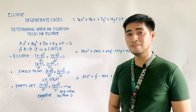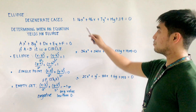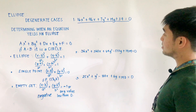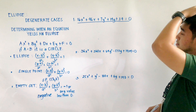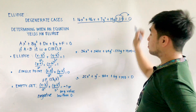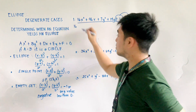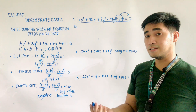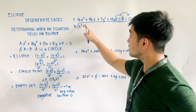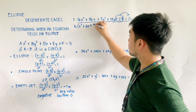Let's have examples to illustrate these three: an ellipse, a single point, or an empty set. For the first one, let us convert this into standard form. We are given 16x² + 96x + 7y² + 14y + 39 = 0. This is in general form. We need to transpose the constant to the right-hand side and complete the square. We have 16 times (x² + 6x + 9), where 6 divided by 2 is 3 and 3² = 9.